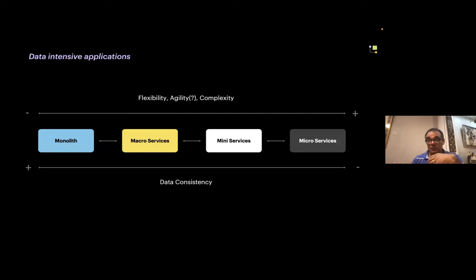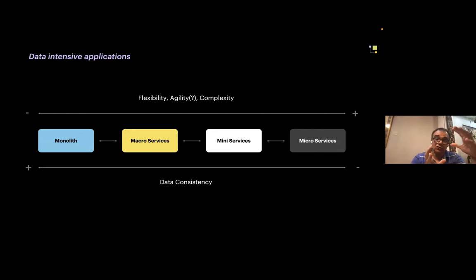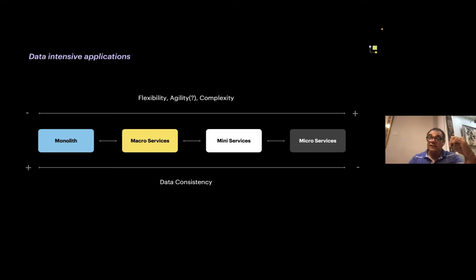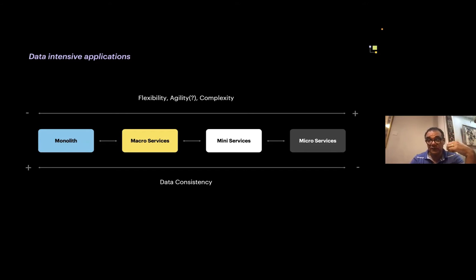Going from monolith to microservices, passing through macro services and mini services, what we need to understand is what we gain. Moving from monolith to microservices gives us flexibility, agility, and also complexity. With a monolith, everything is in one place and all modifications are straightforward, but the further you move towards microservices, data consistency needs to be considered from another perspective. We will see the different alternatives when building this knowledge base.